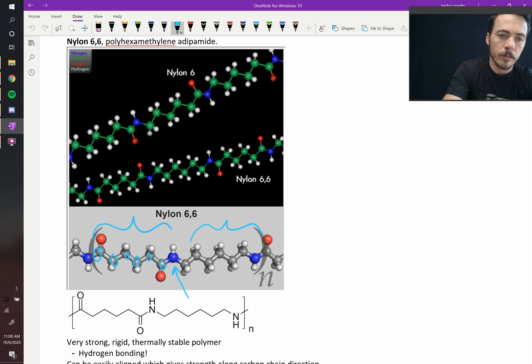And then this blue atom right there is a nitrogen. And then you start the second part of the chain, one, two, three, four, five, six carbons, and then you've got another nitrogen. So they call it 6-6 because it has six carbons and then a nitrogen and then six carbons and a nitrogen.